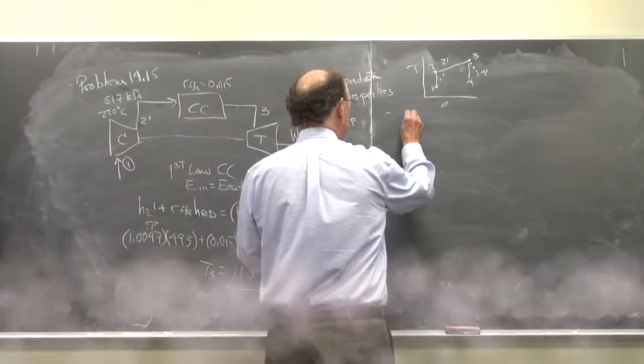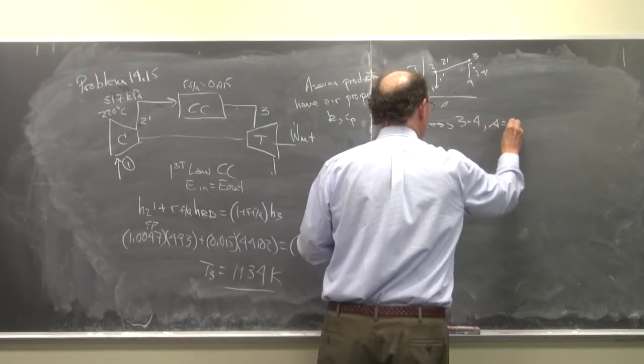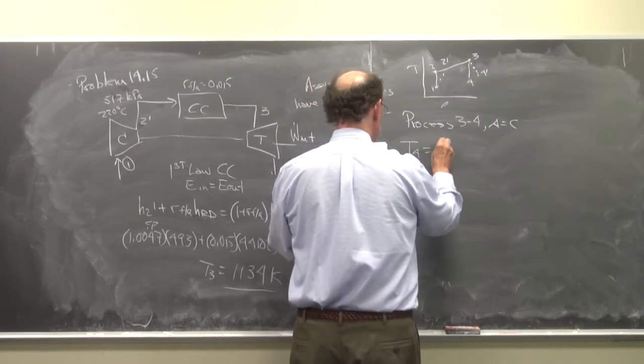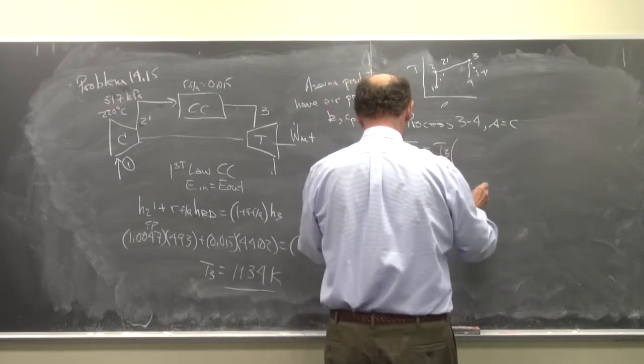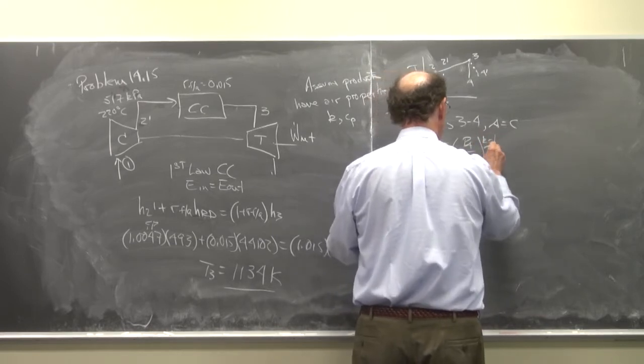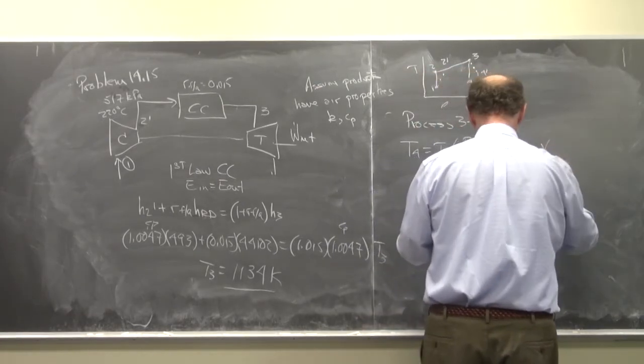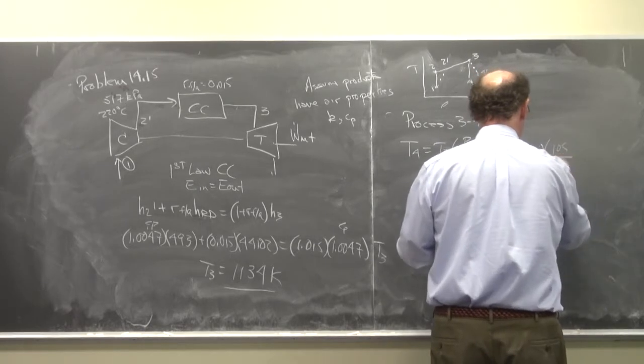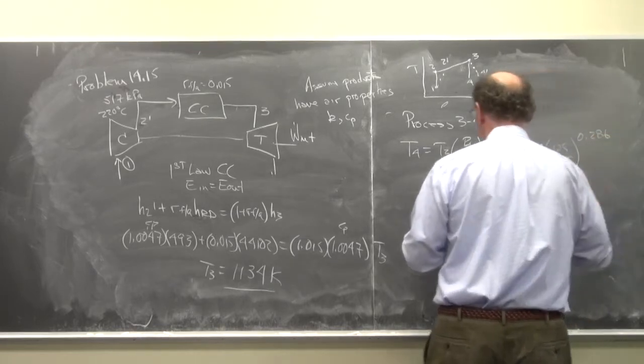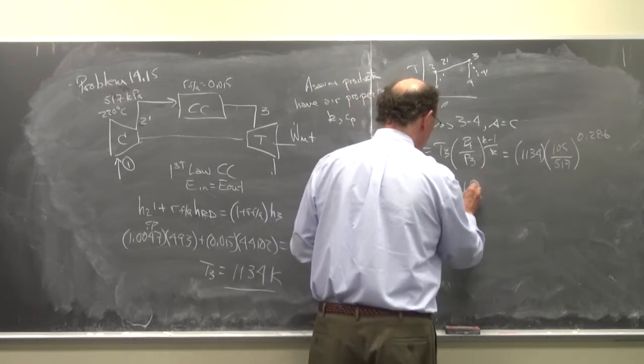So the process 3 to 4, S equals C. So T4 is equal to T3 times P4 over P3 to the K minus 1 over K is equal to 1134 times 105 over 517 to the 0.286. And so I get that T4 is equal to 718 degrees K.